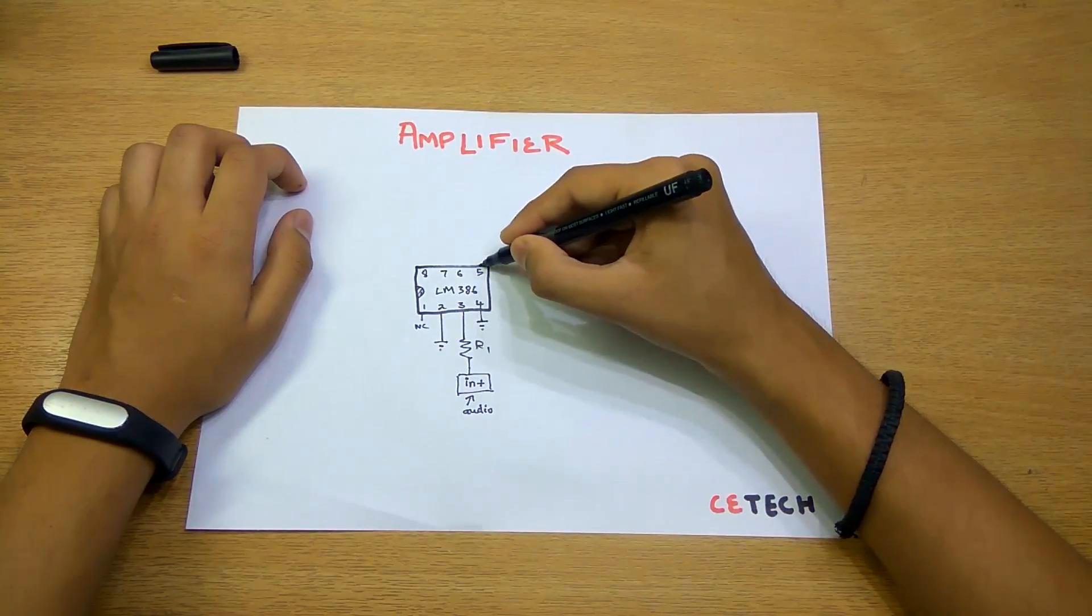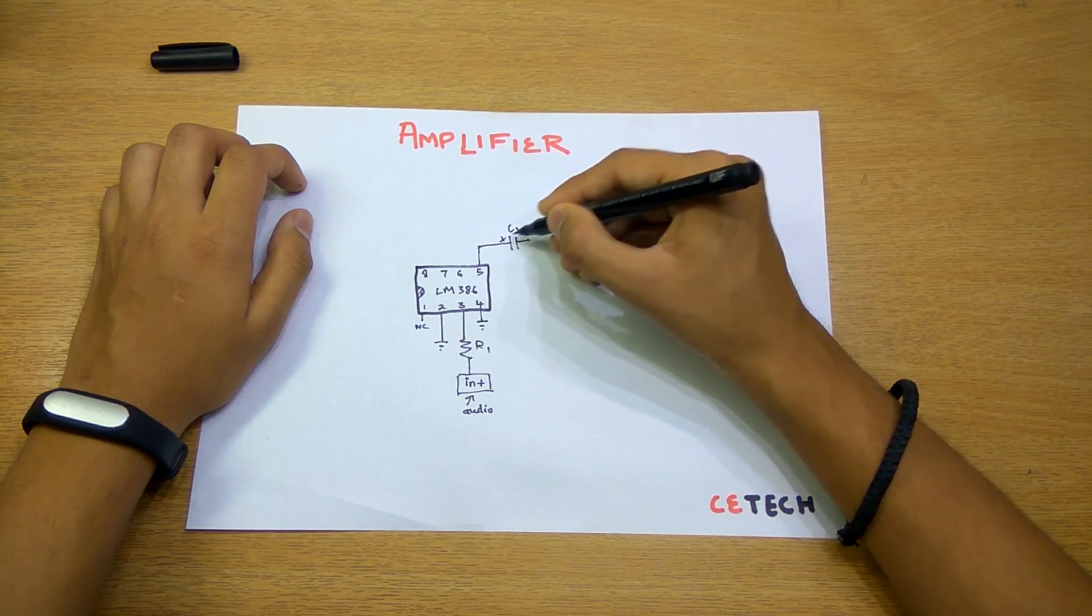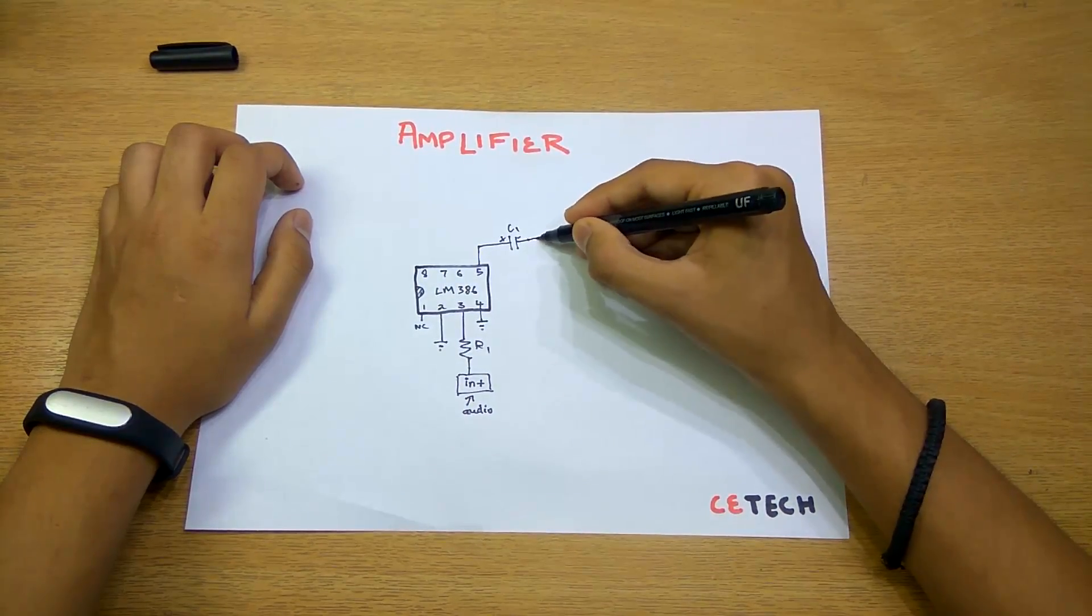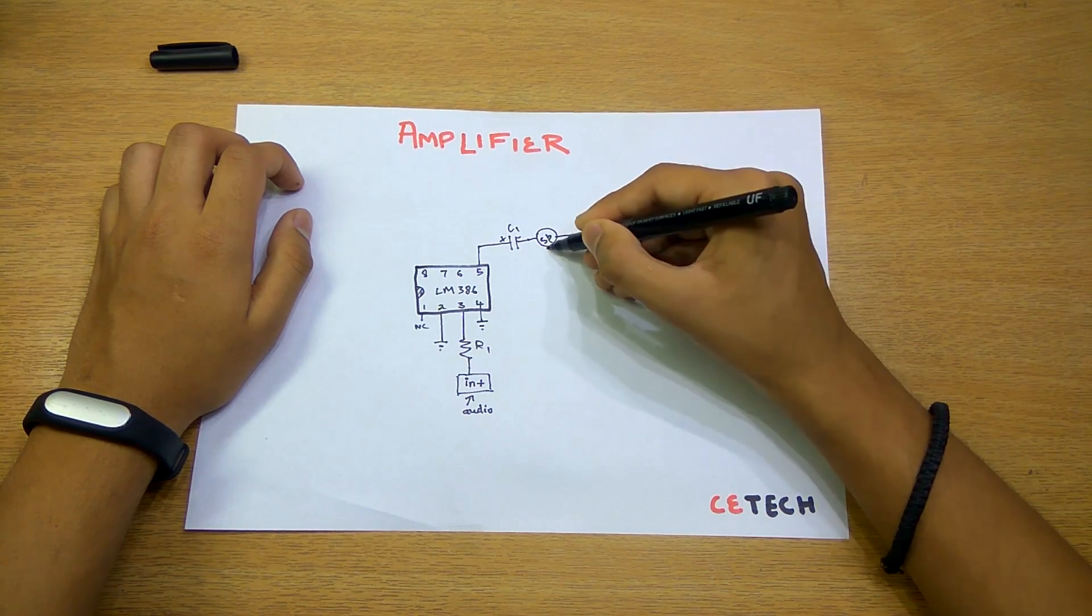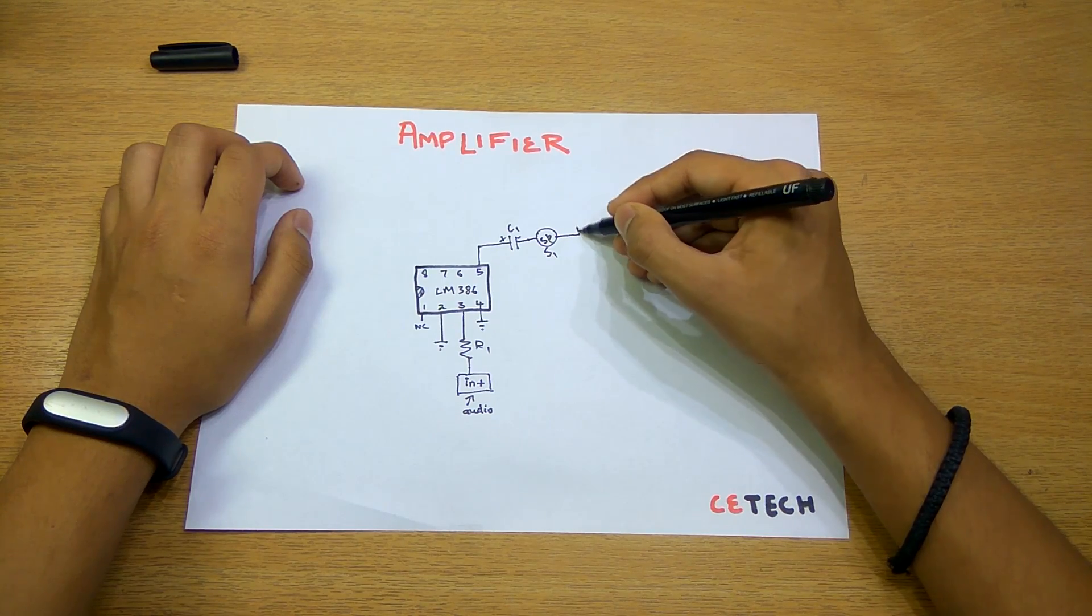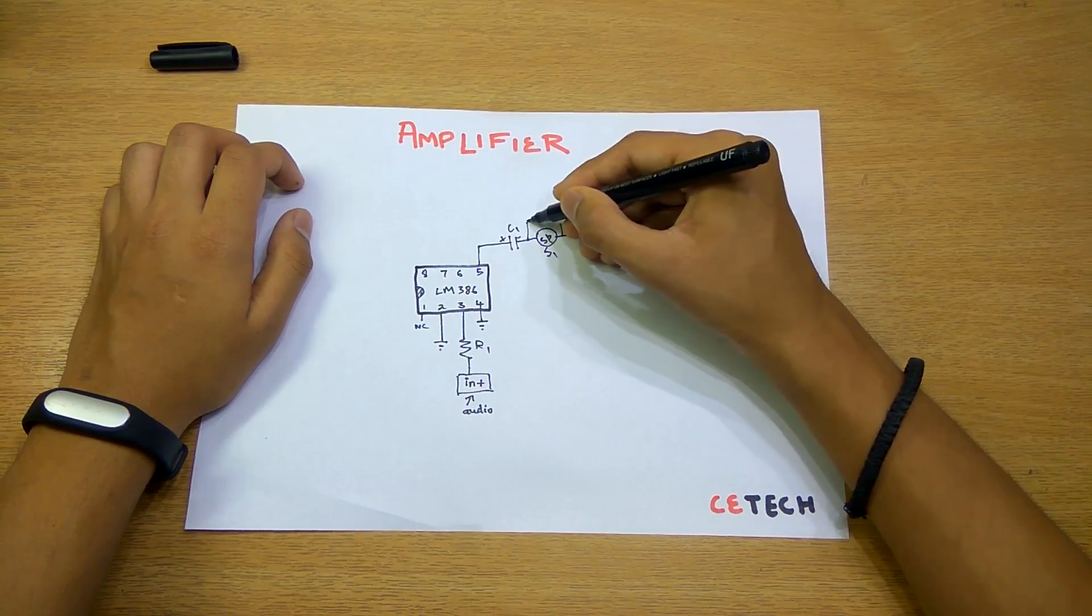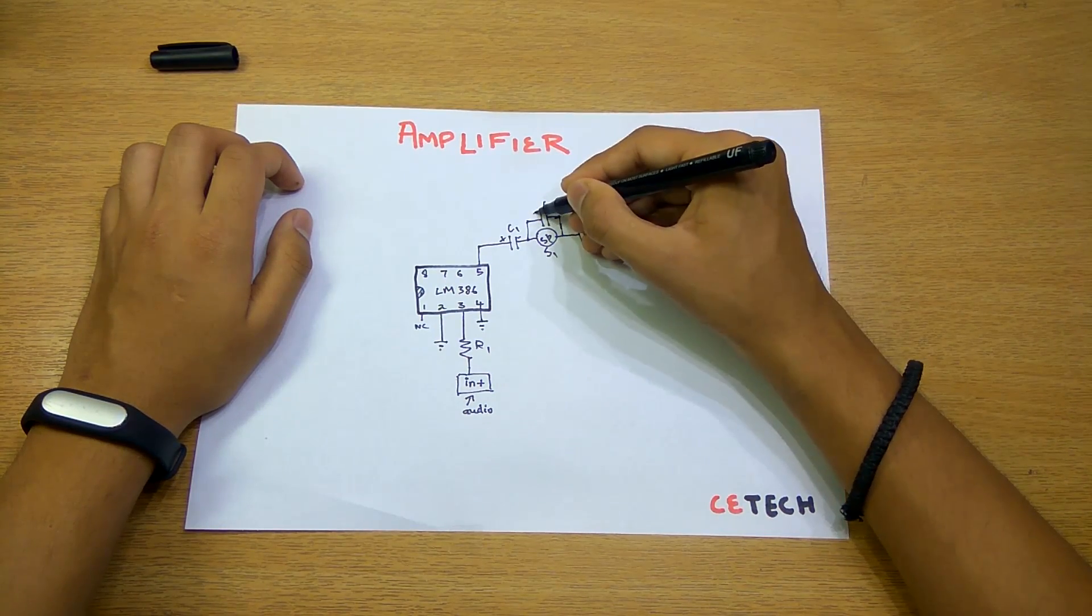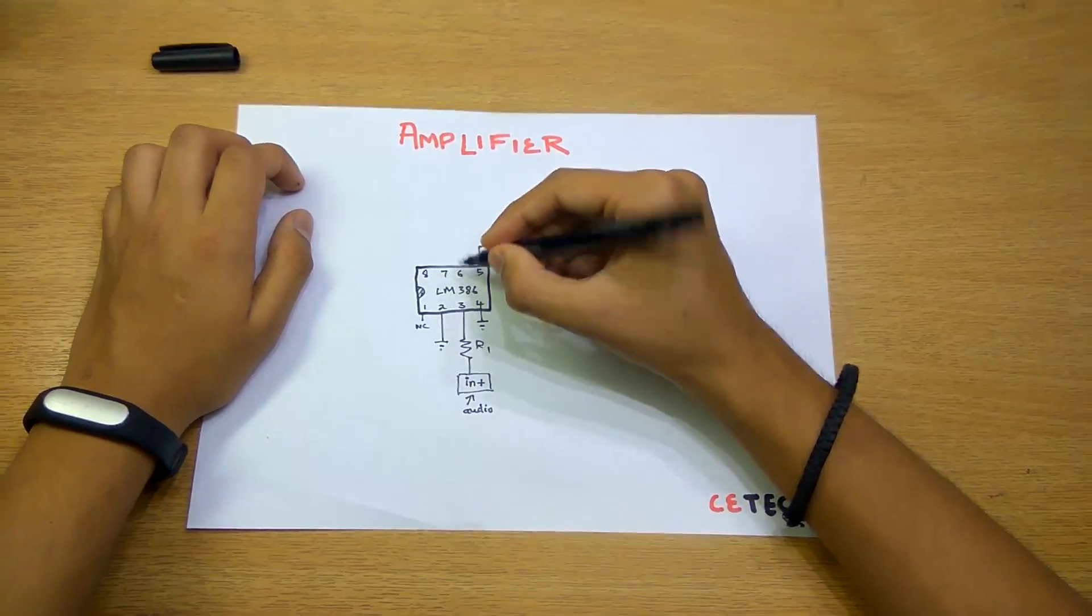The fourth pin right here will also be connected to the ground. The fifth pin will be connected to a capacitor, say C1, with its positive side here and its negative side here, and in series will be connected to the ground. Further, we can also add filter caps right here so that the audio is clear. This is C2, this will be positive right here and negative right here.